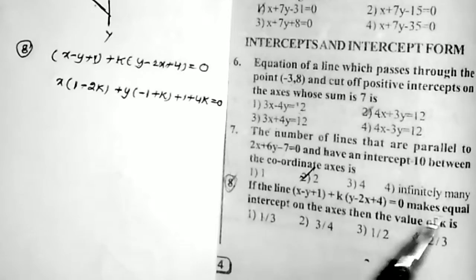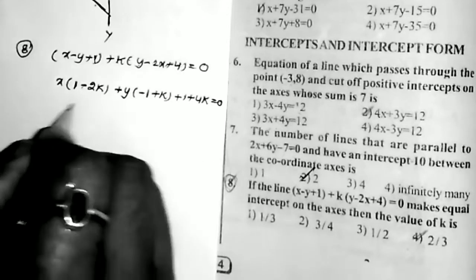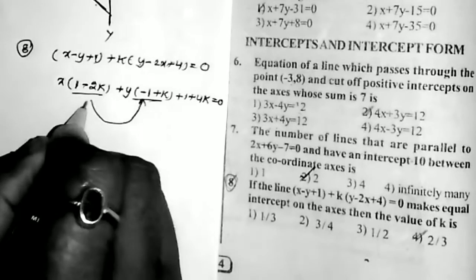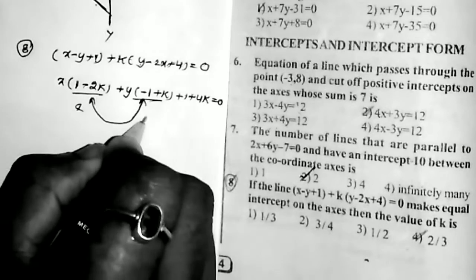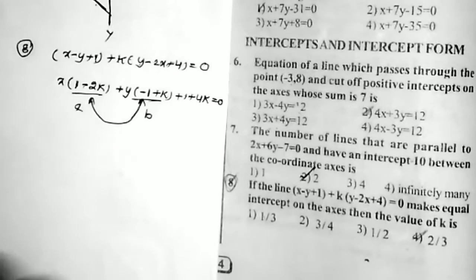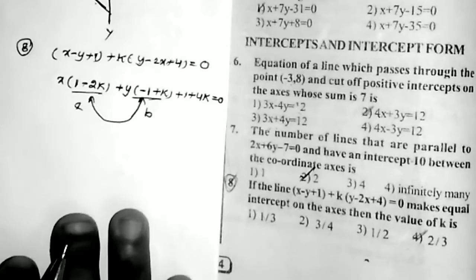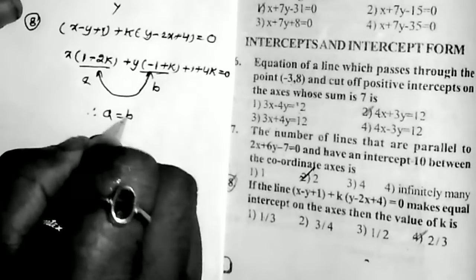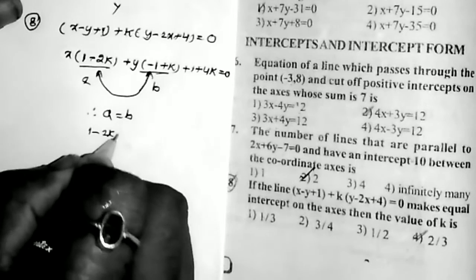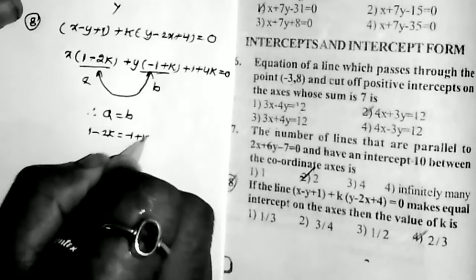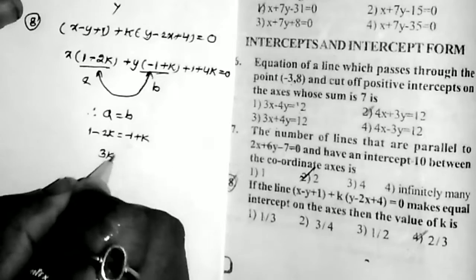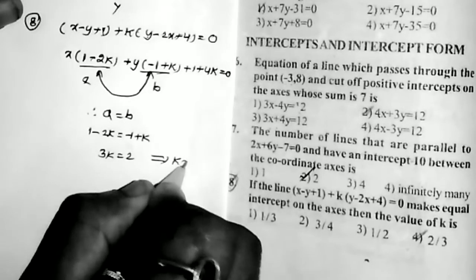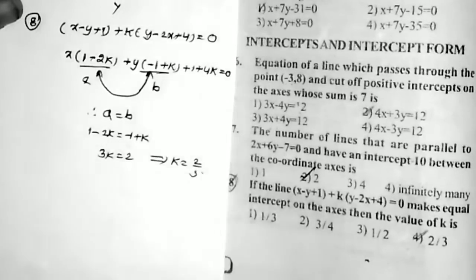The line makes equal intercepts, which means a = b. So 1 − 2k = −1 + k, giving 3k = 2. Therefore the value of k = 2/3.